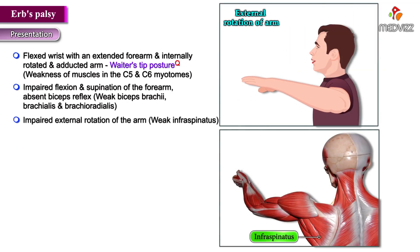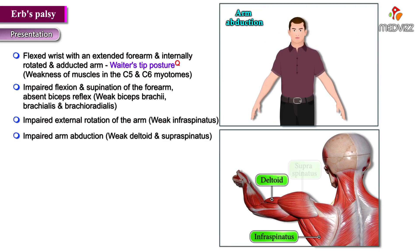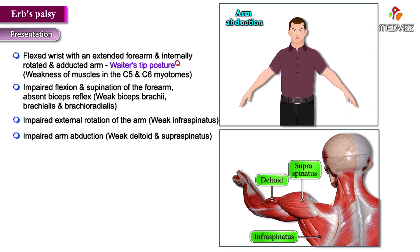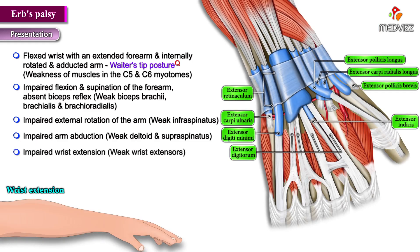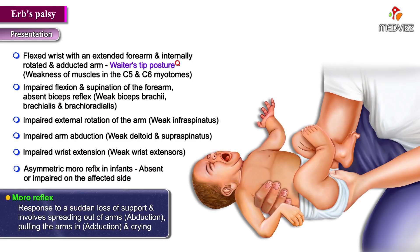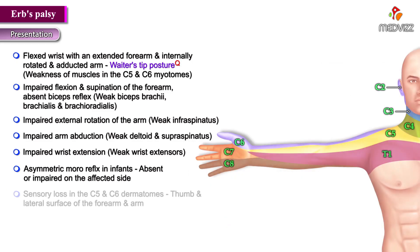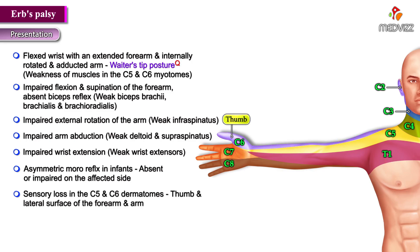The weak infraspinatus results in impaired external rotation of the arm. A weak deltoid and supraspinatus results in impaired arm abduction, and the weak wrist extensors result in impaired wrist extension. Asymmetric Moro reflex in infants, which is absent or impaired on the affected side, is one of the clinical signs for diagnosing Erb's Palsy. There is sensory loss in the C5 and C6 dermatomes, along the thumb and lateral surface of the forearm and the arm.